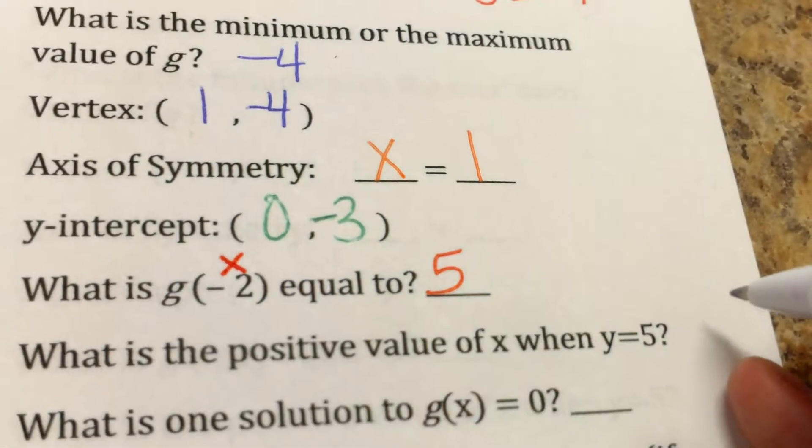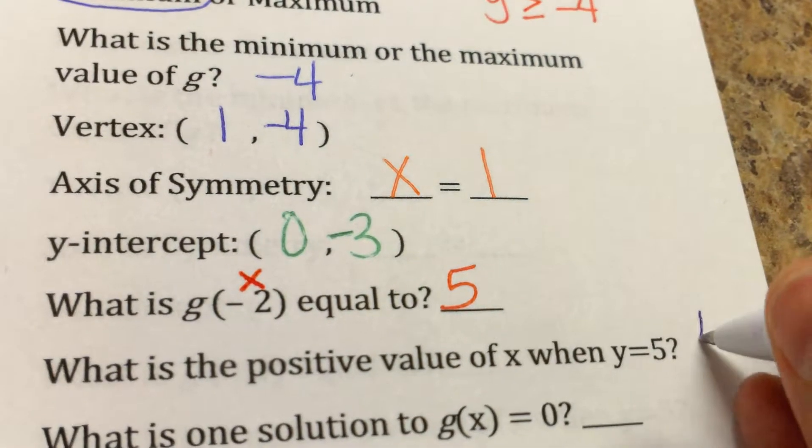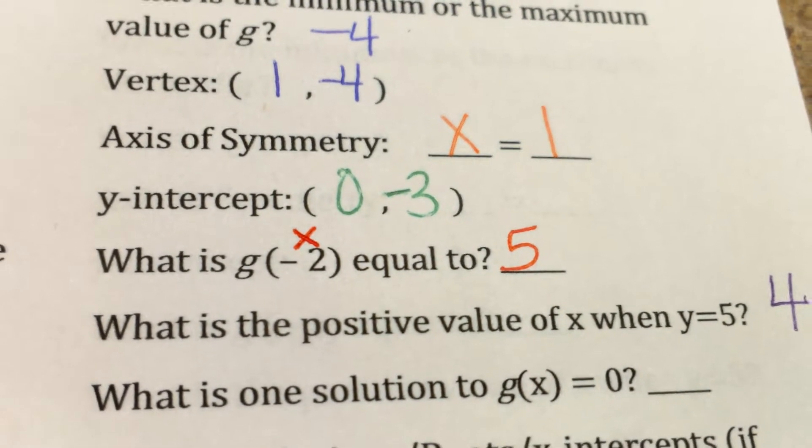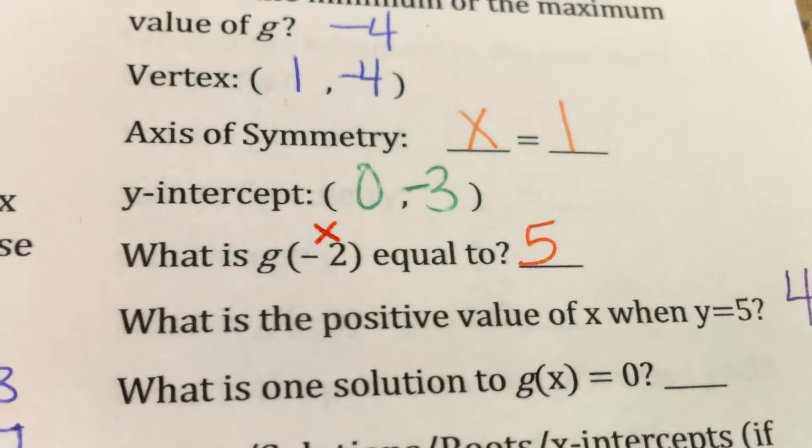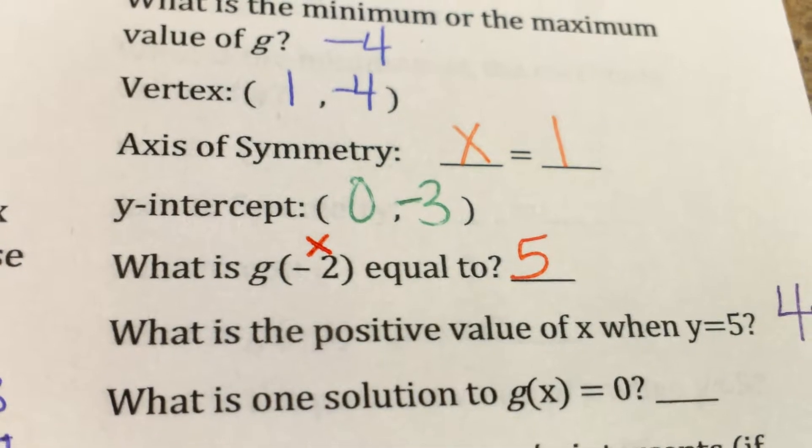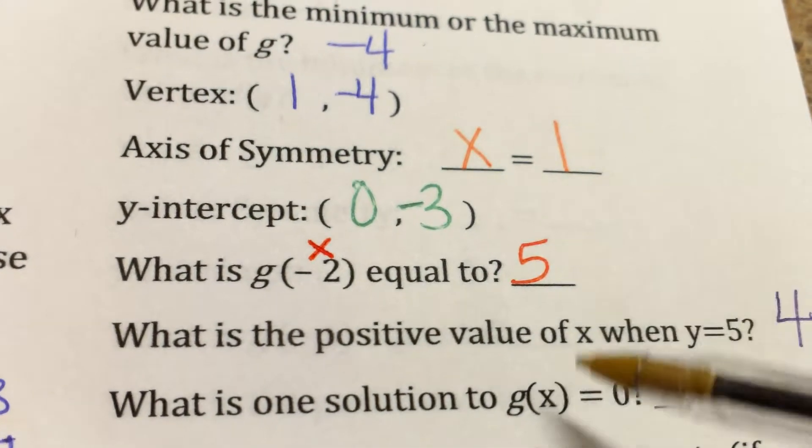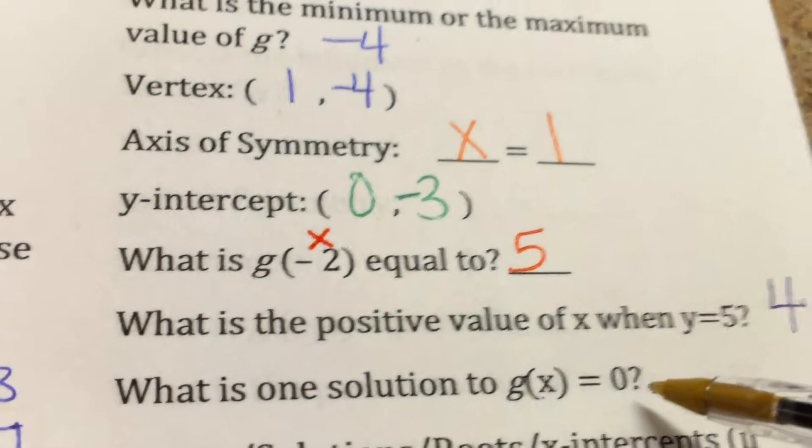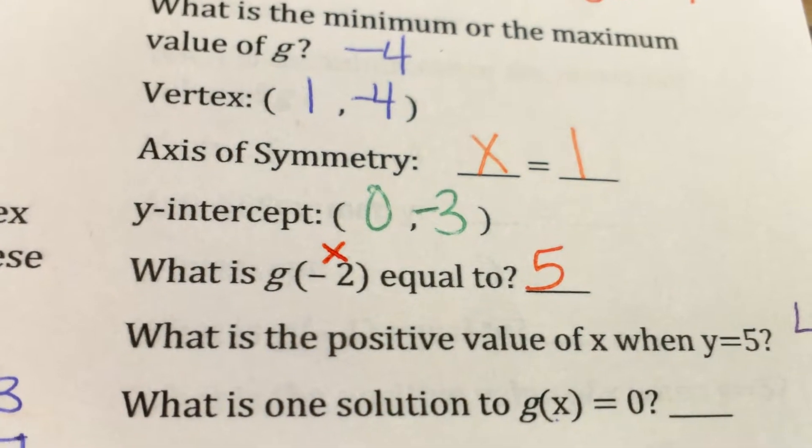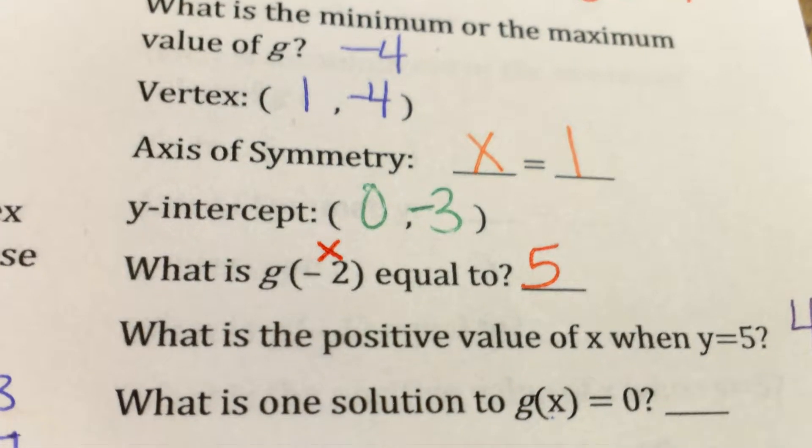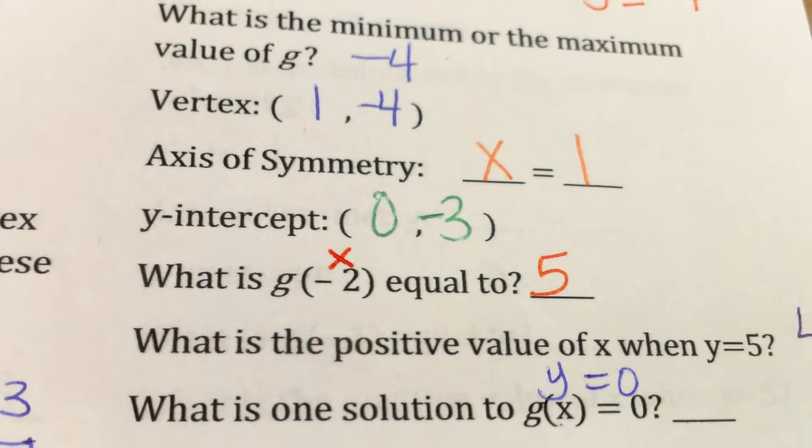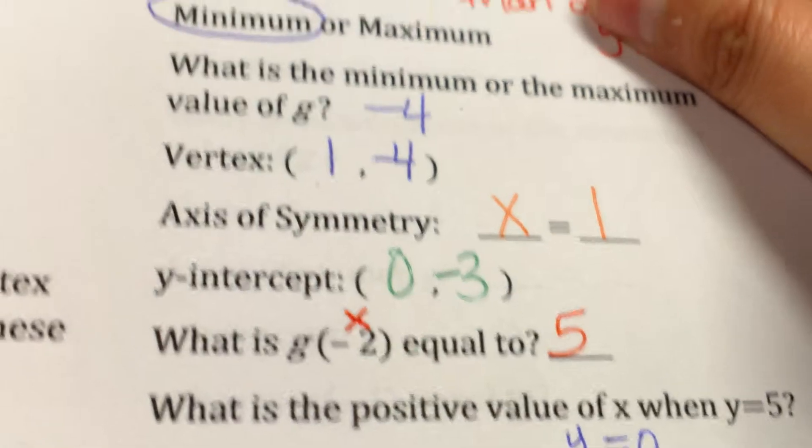What is one solution when g of x equals 0? Here it's not saying that x is equal to 0. It is saying we're looking for the x, but it's saying that the y is equal to 0, because remember f of x is the same as y. G of x is the same as y. So this is saying y is equal to 0 and we're trying to find the x. So let's go ahead and go to y equals 0.